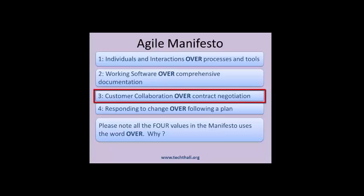Value 3: Customer collaboration over contract negotiation. It is more important for the customer to be intimately involved with the product development team. Their focus on the terms and conditions of the project must be given a low priority. Specific project timelines are difficult to predict and commit to. Instead, an Agile project should focus on regular interactions with customers for constant feedback, and work with the team to adjust timelines as the project progresses.